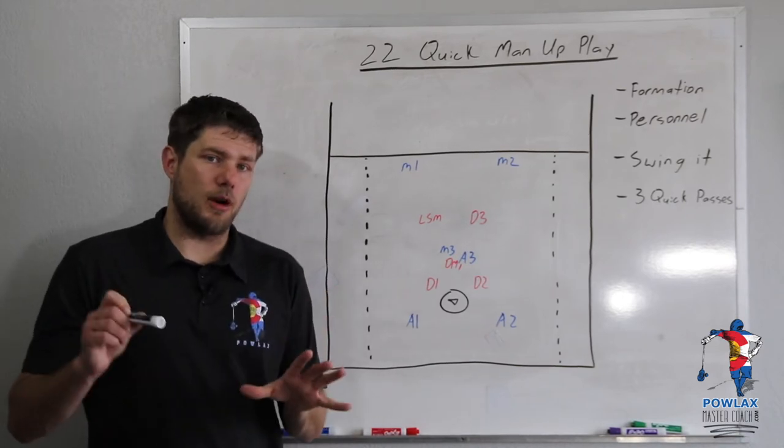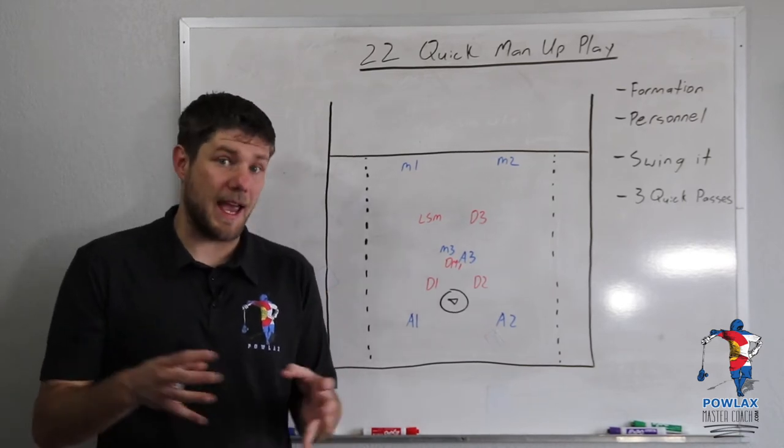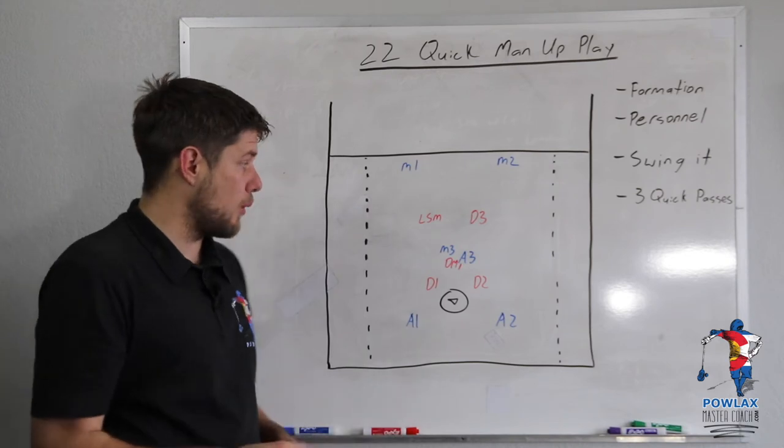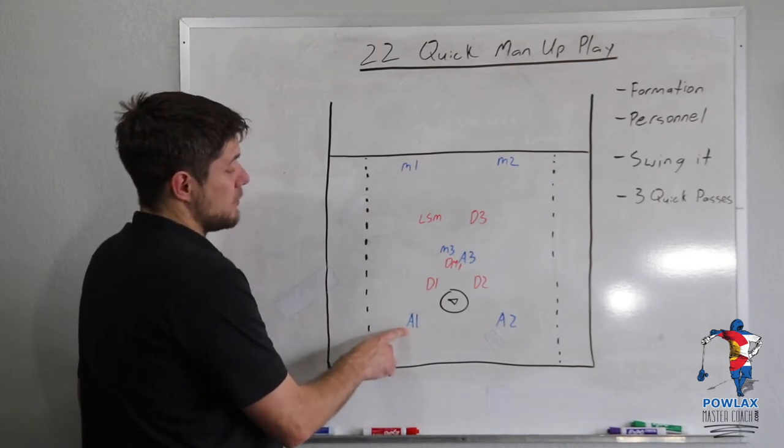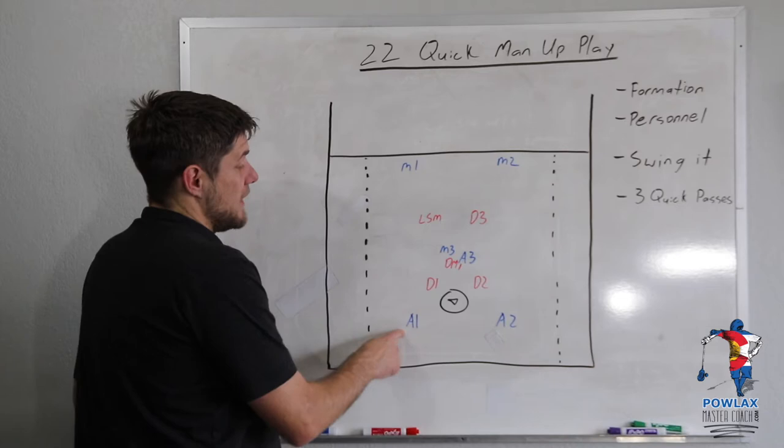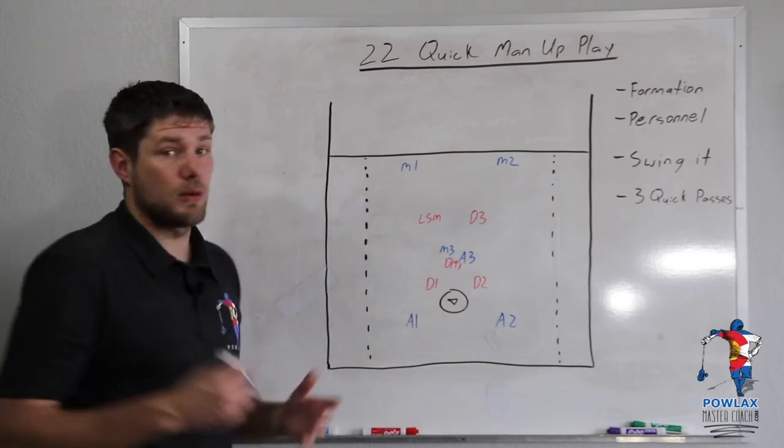Now the most important part of this play is the timing and where our personnel is. And the most important two players are going to be A1 here who is going to be our lefty feeder and then A3 who is going to be our righty finisher.